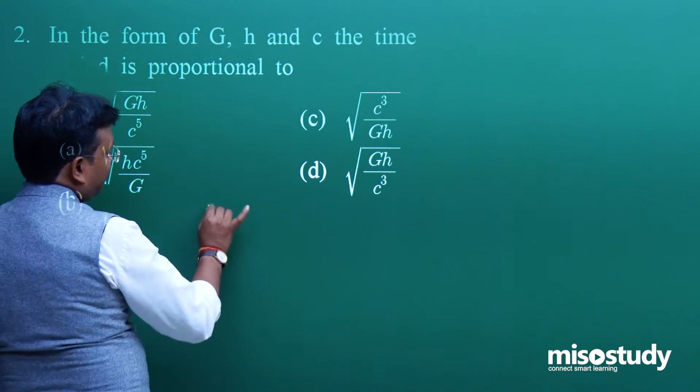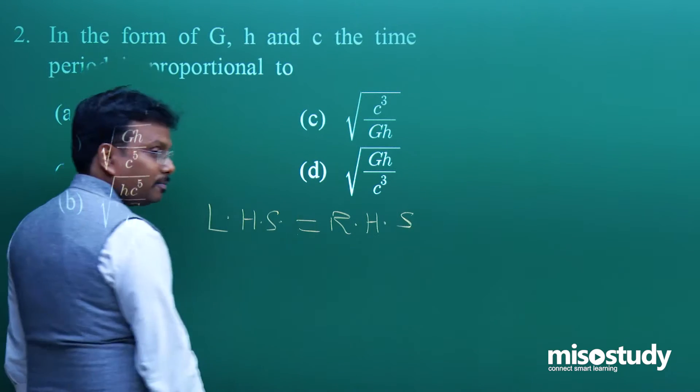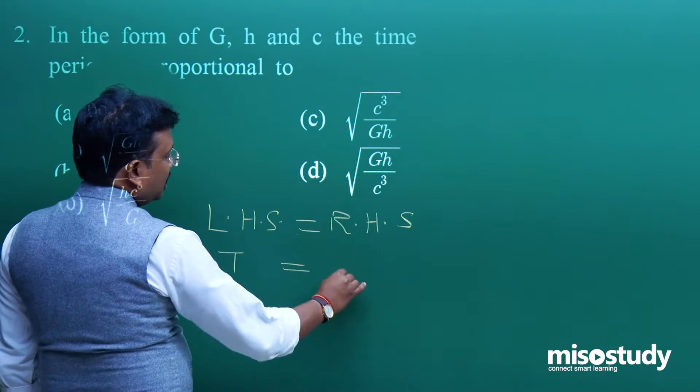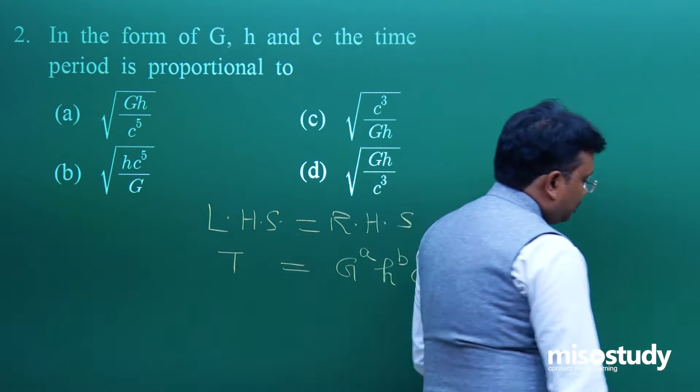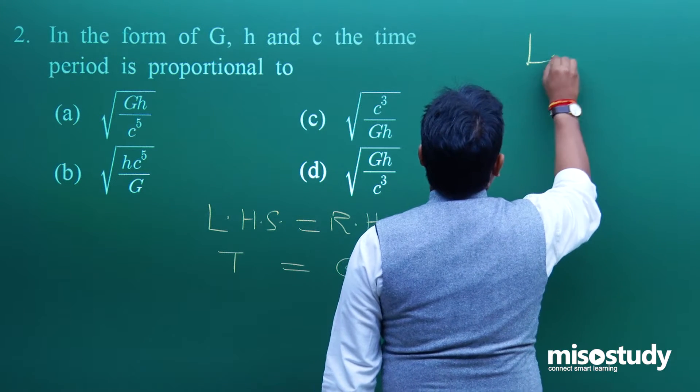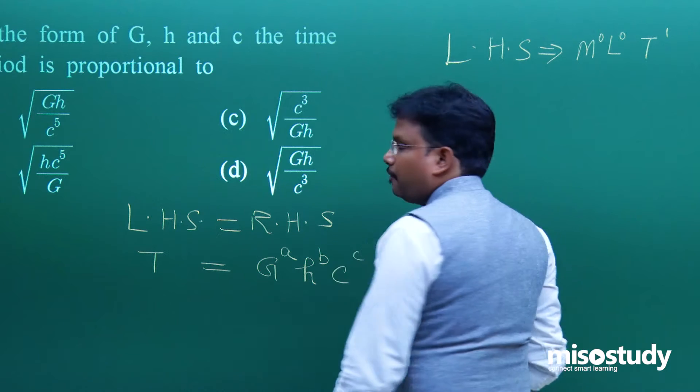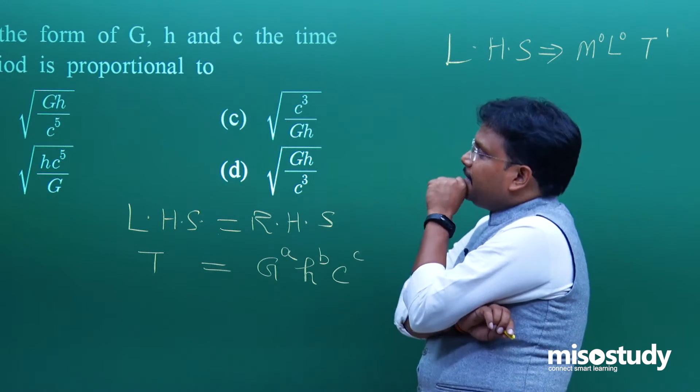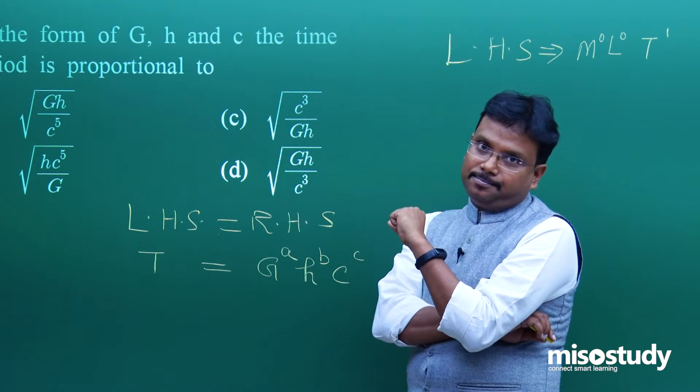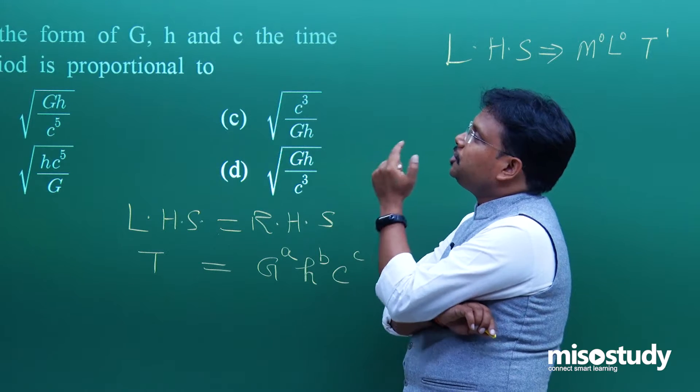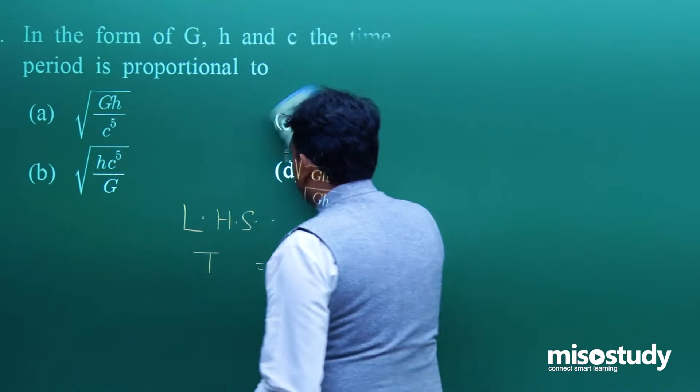There are two parts: left hand side equals right hand side. Time period T equals G^A times H^B times C^C. On the left side, M^0 L^0 T^1. My suggestion is try to recall certain basic dimensional formulas - that will save a lot of time. Otherwise you have to find the dimensional formula of G, H, and C in the examination hall, which will consume time.